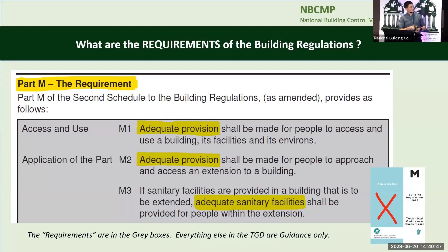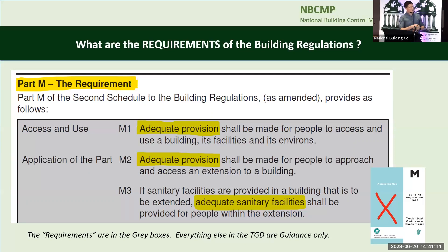The requirement is: adequate provision shall be made for people to access and use a building, its facilities and environs. That's the requirement — that's what the regulations are made up of. They are the grey boxes within the technical guidance documents. Don't confuse the regulations versus the guidance. The guidance document is there to demonstrate compliance with the requirement, but it's the building control authority's and the consultant's job to prove compliance with the regulation.